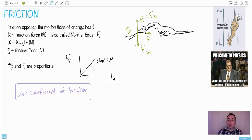This R is the reaction force, measured in Newtons. It's also called the normal force. We have W as the weight, also in Newtons. We have the friction force, which is in Newtons. And the key thing is that F, the friction force, and the reaction force, the normal force, they're proportional. What that means is you have a bigger force of friction when you have a bigger reaction force.